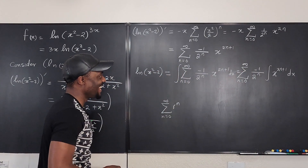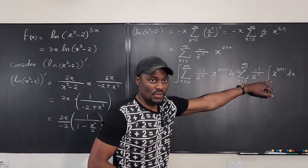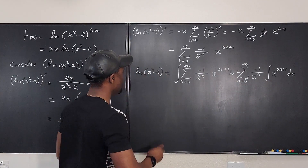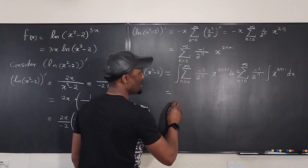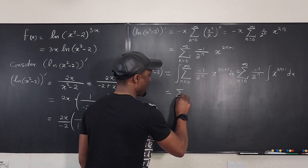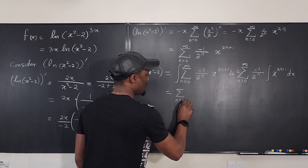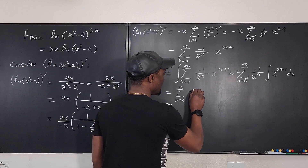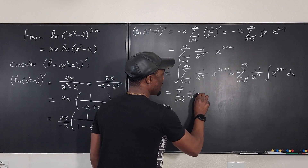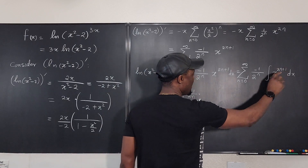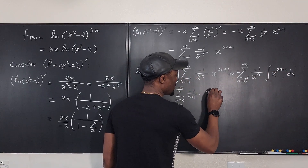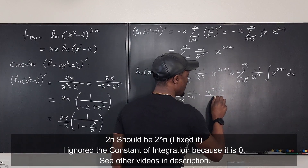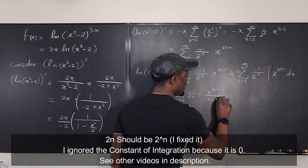Integrating x^(2n+1) gives x^(2n+2) / (2n+2). So ln(x² - 2) equals the sum from n=0 to infinity of (-1/2^n) · x^(2n+2) / (2n+2).